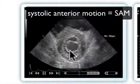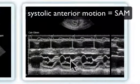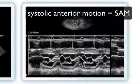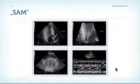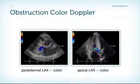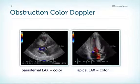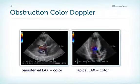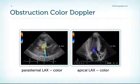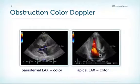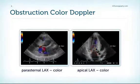SAM can also be seen in a short axis view and even in M-mode, where during systole we have motion of the anterior leaflet which obstructs the LVOT. Using color Doppler, we can visualize the obstruction: there is turbulent flow in the LVOT and even some mitral regurgitation. We'll talk about the importance of this form of mitral regurgitation later. In the apical long axis view, turbulent flow begins at the region of obstruction by the mitral valve.